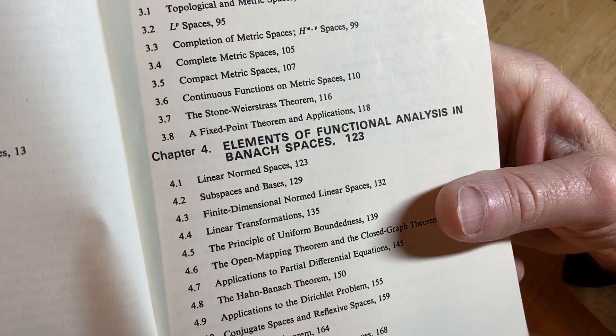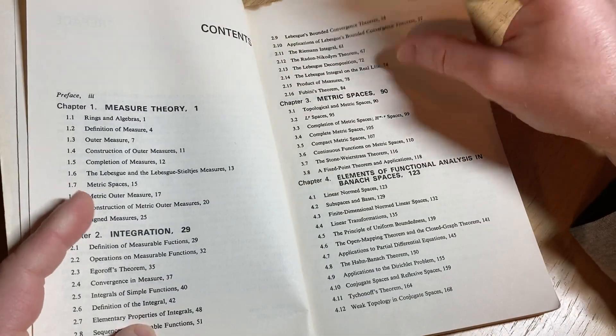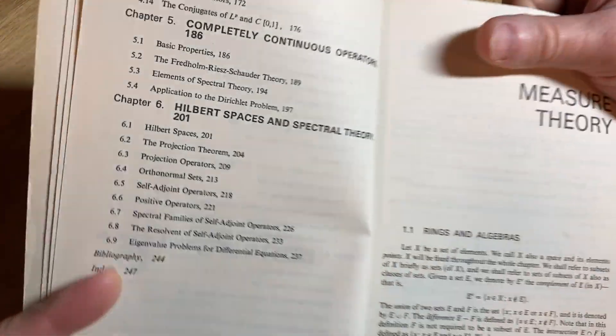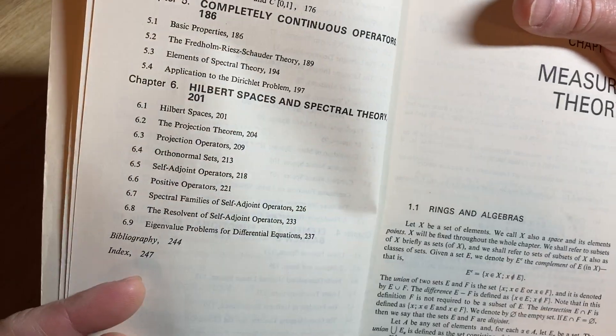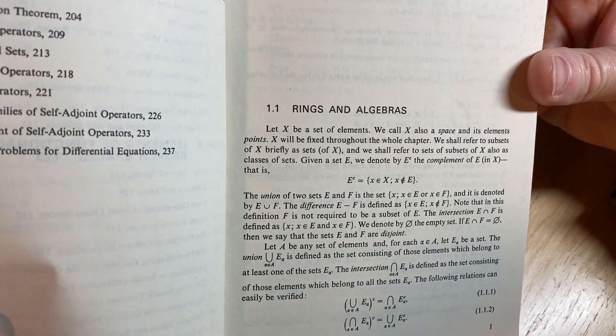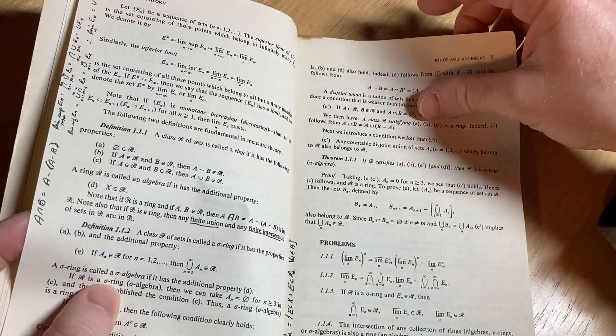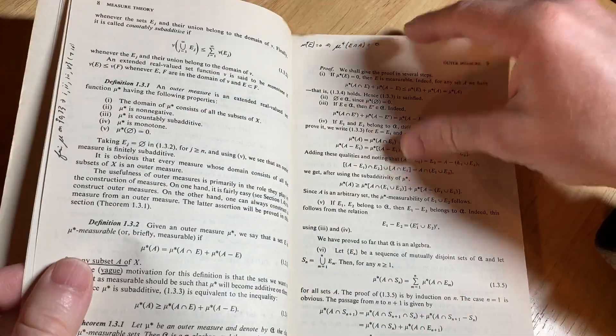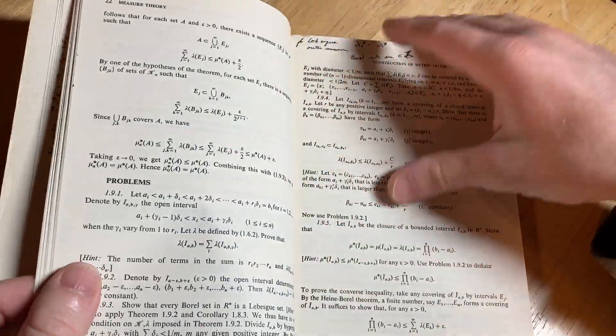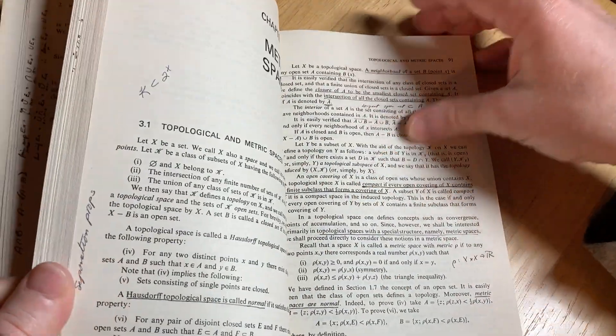So metric spaces, elements of functional analysis, and Banach spaces. A lot of big theorems there. Completely continuous operators, Hilbert spaces, and spectral theory. It starts with rings and algebras right away, right? So yeah, ideally you've had some mathematics. You've had some analysis. You've had some abstract algebra, some topology. You know how to read mathematics, and hopefully you're decent at learning new mathematics.